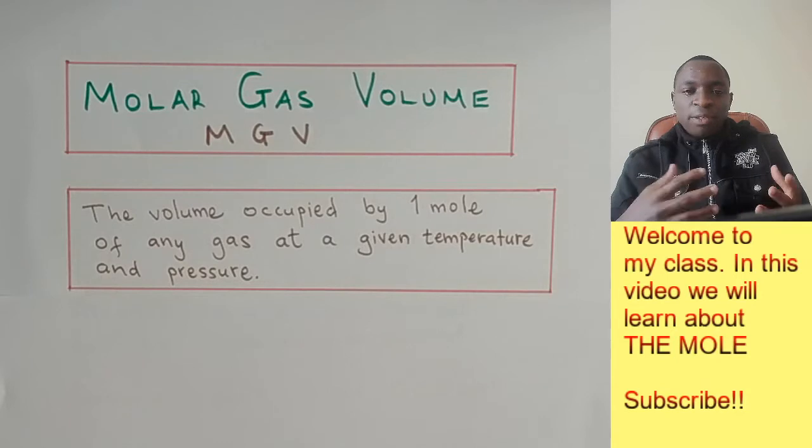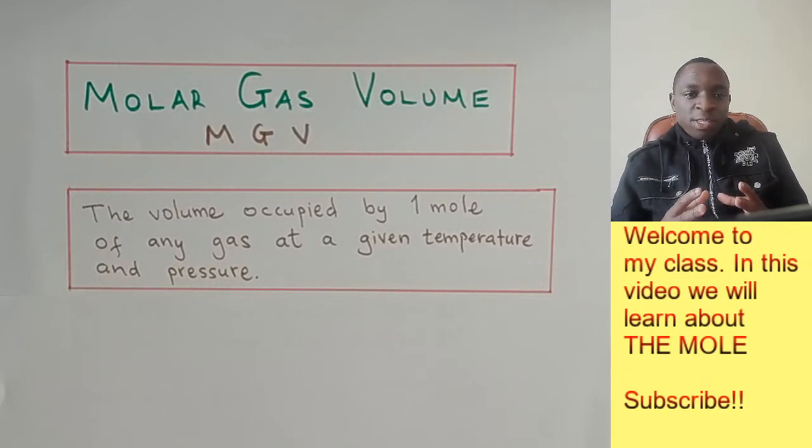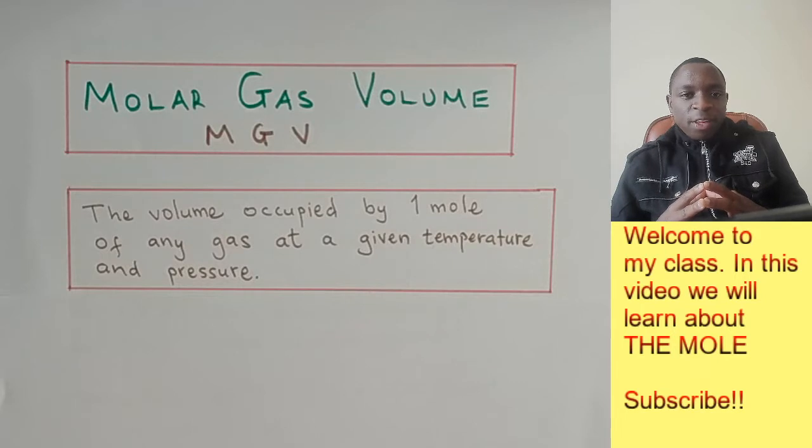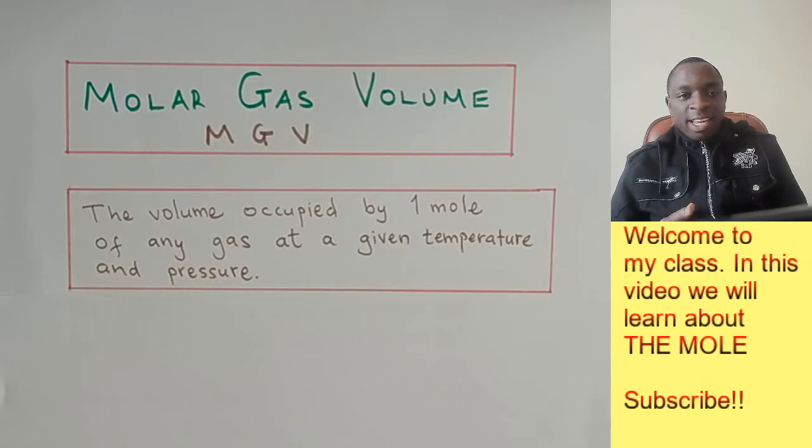Now it follows that there is a need to come up with a conventional way of reporting our volumes so that whenever we say 20 cubic centimeters of oxygen, we are sure that the temperature and pressure at which we measure that volume is the same throughout. So that brings us to what is known as RTP and STP.